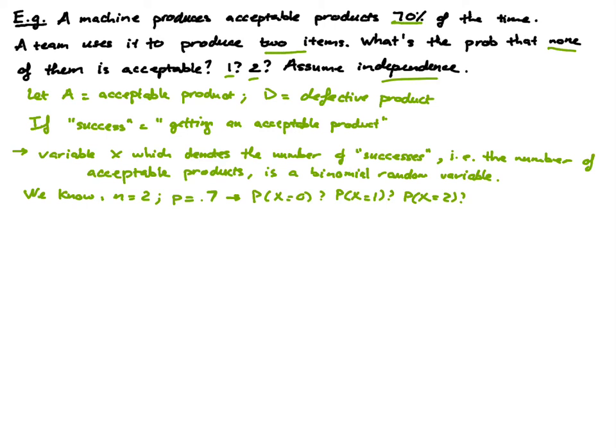At this point there are two ways to proceed: you can either punch these numbers into a calculator using the binomial probability function formula, or we can use the binomial table. I'm going to use the table to show you how we can find probability with the table, but if you want to use a formula, that's fine too.